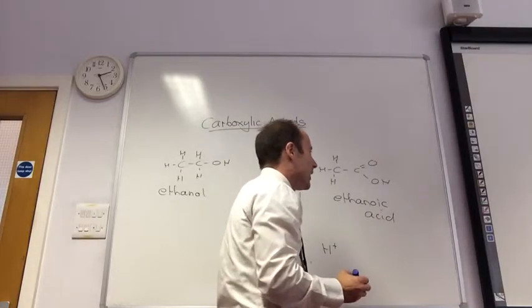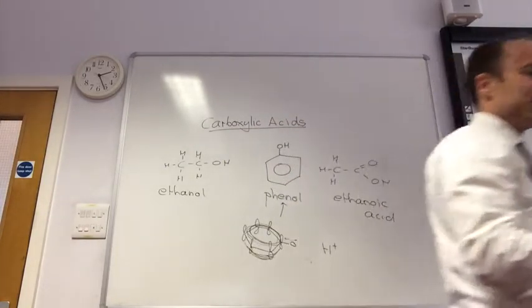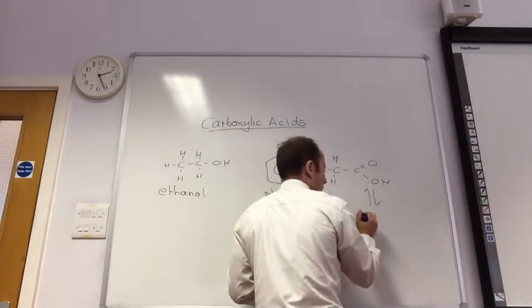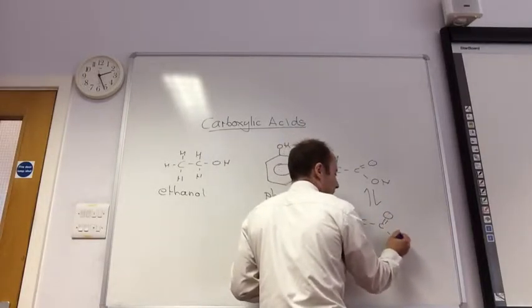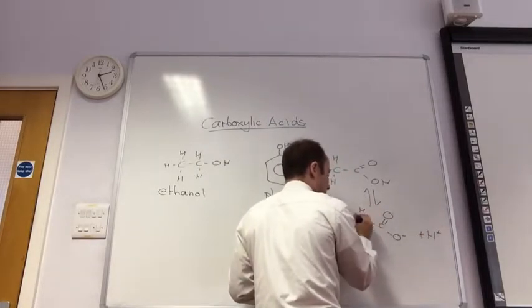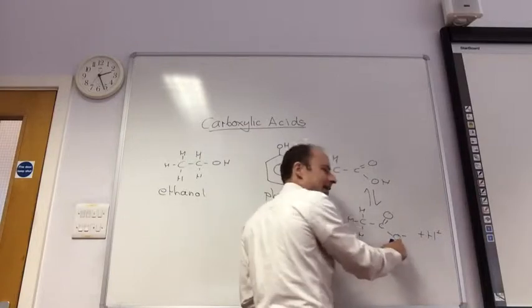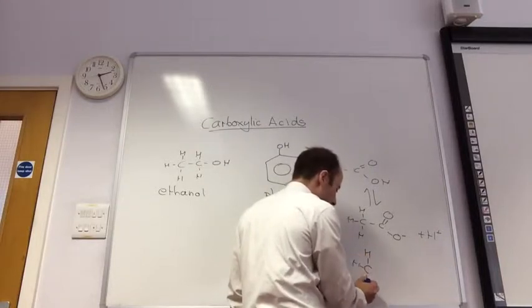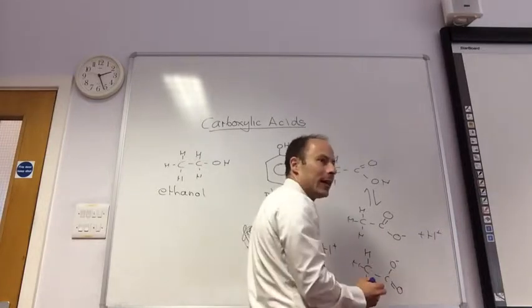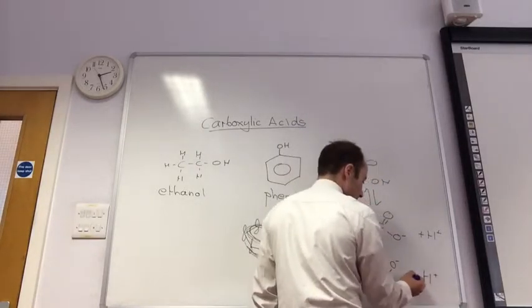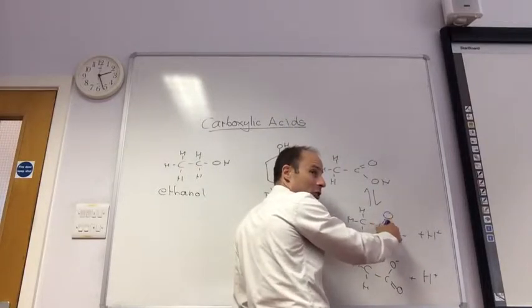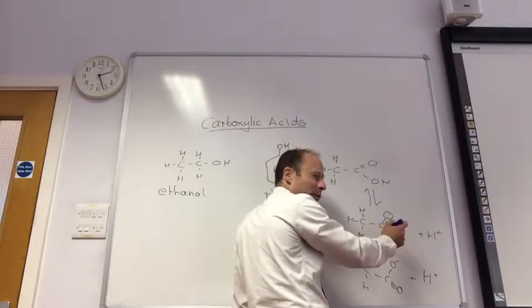Ethanoic acid, when it behaves like an acid, it donates a hydrogen — it loses the hydrogen. So in water, it's in equilibrium with this ion plus H+. What could happen to that negative charge? Does it have to be on that oxygen, or could it perhaps be shared? When we talk about resonant structures...